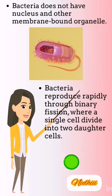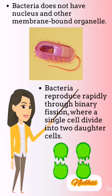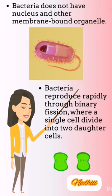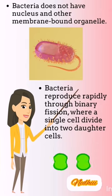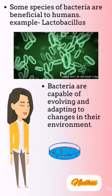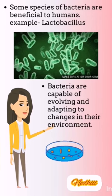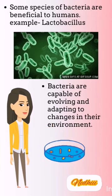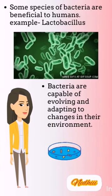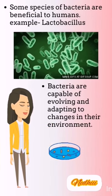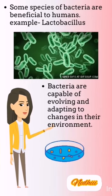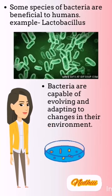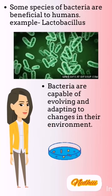Bacteria reproduce rapidly through binary fission, where a single cell divides into two daughter cells. Some species of bacteria are beneficial to humans, for example Lactobacillus.